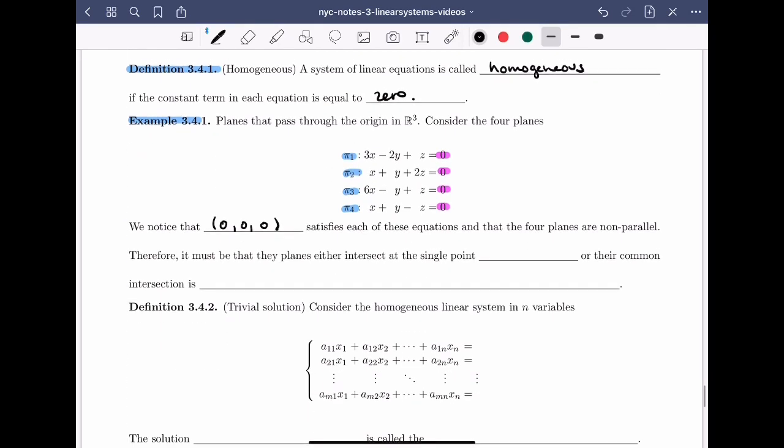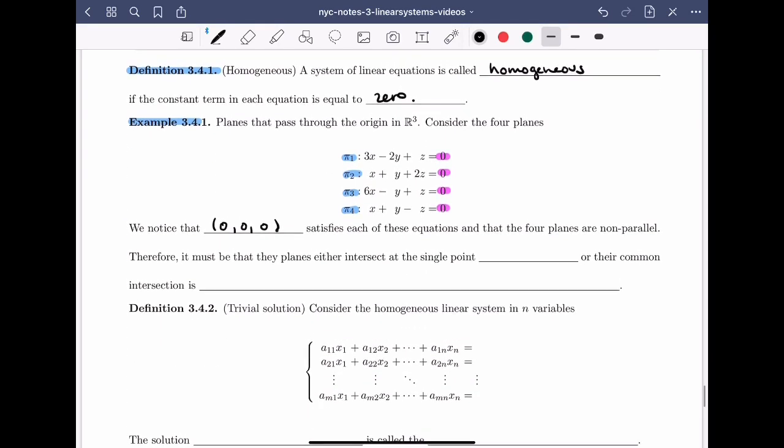So I know that the planes aren't parallel to each other. So geometrically, what do I know? Well, I know that therefore the planes must either intersect at the single point—well, we already know one point of intersection, so it would have to be the single point (0, 0, 0)—or their common intersection is going to have to be a line passing through the origin. And again, we can't have a plane of intersection because none of the planes are parallel.